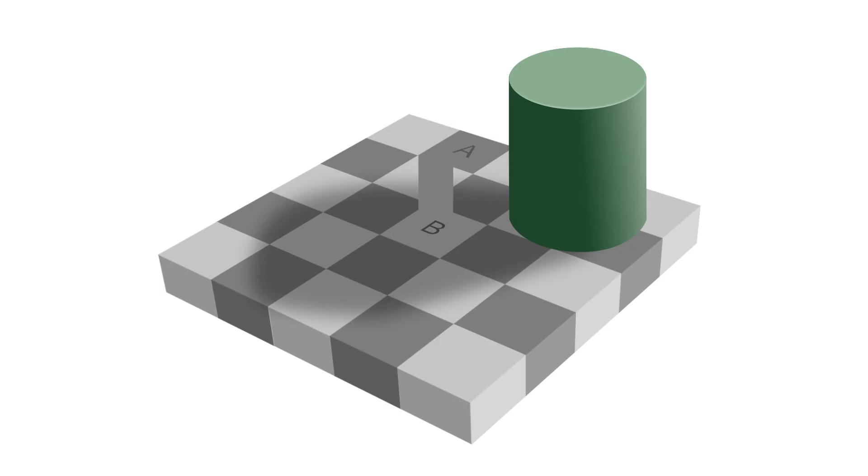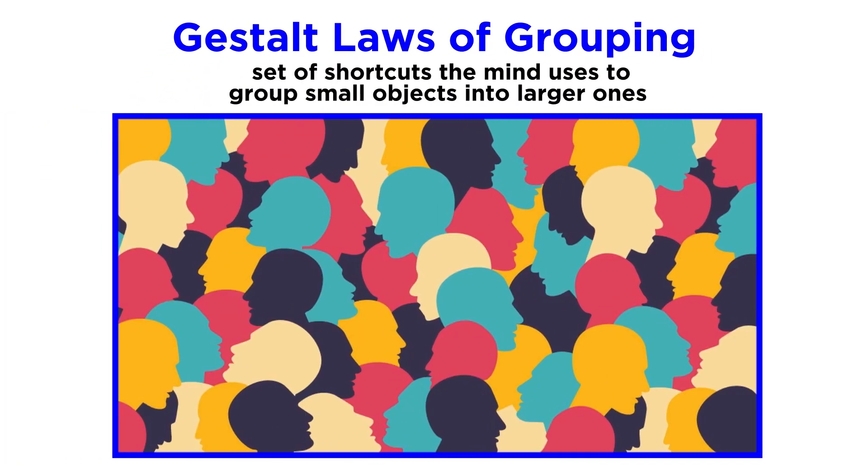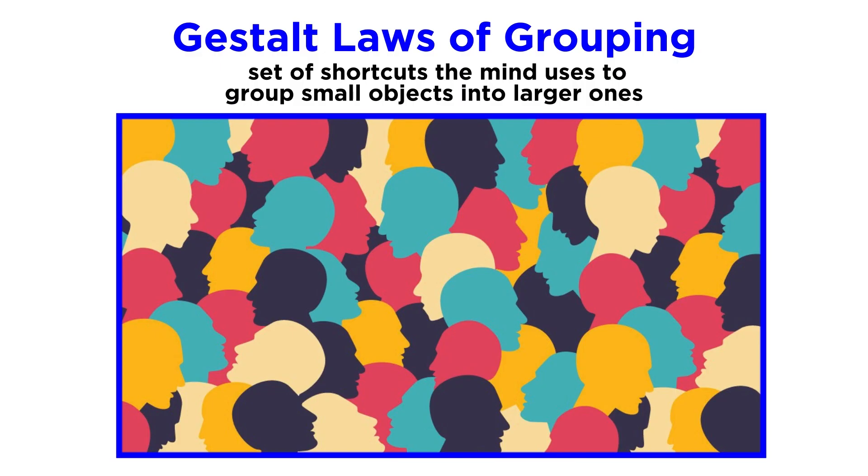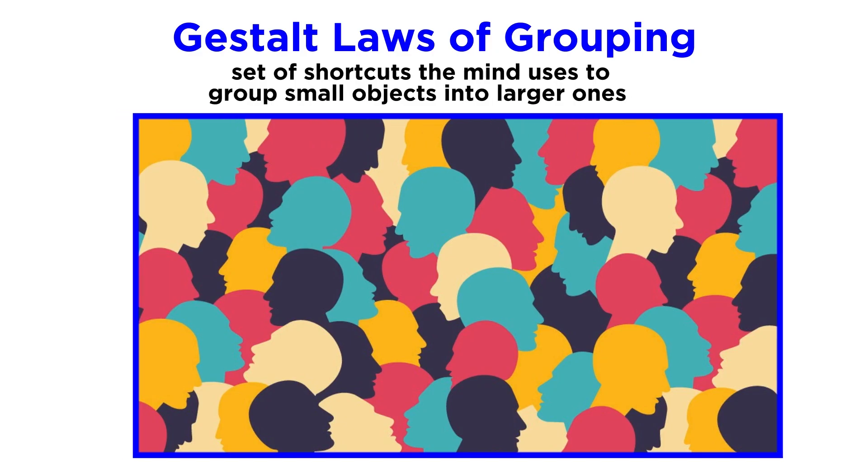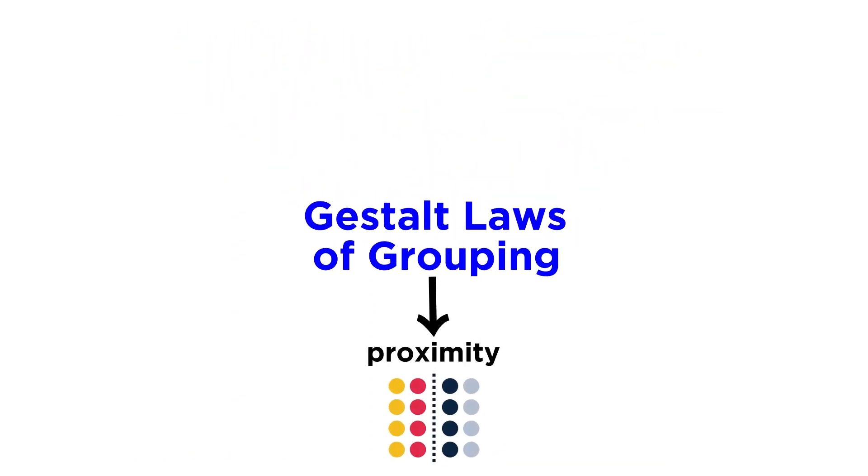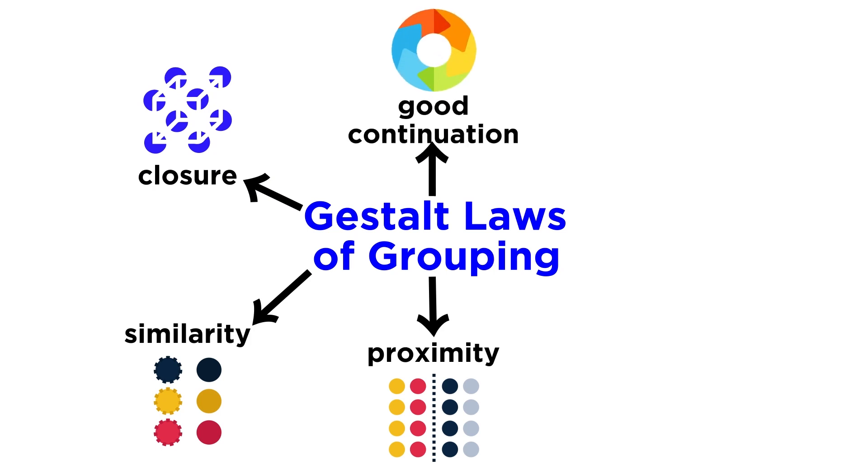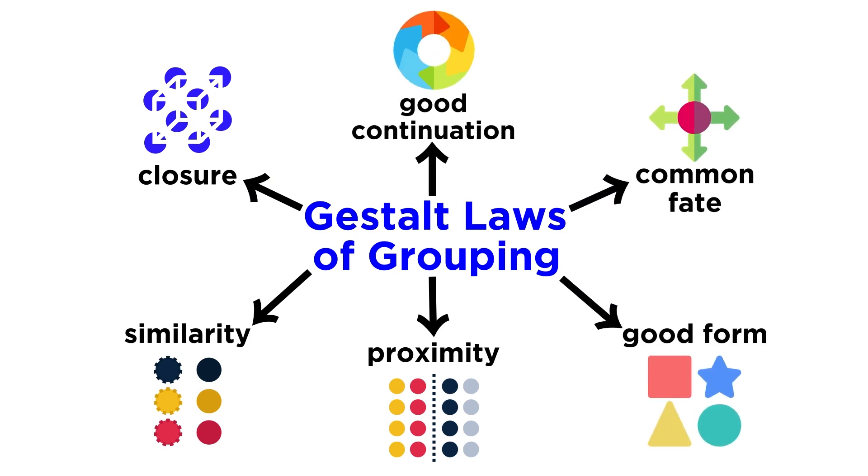Another set of rules the mind uses are called gestalt laws of grouping, or principles of grouping. These rules are a set of heuristics, or shortcuts, that the mind uses to group small objects into larger ones, and they play an important role in our visual perception. The principles are proximity, similarity, closure, good continuation, common fate, and good form. Let's take a moment to look at each of these more closely.